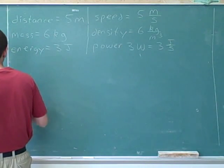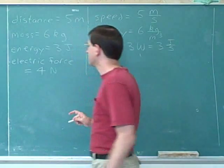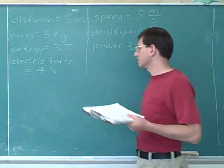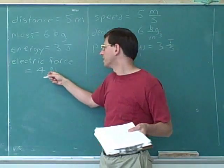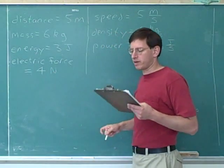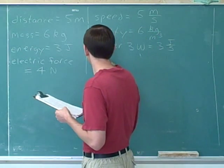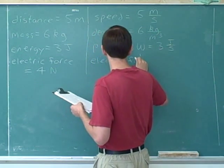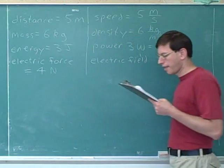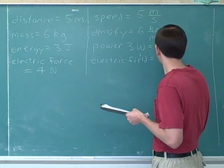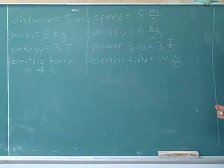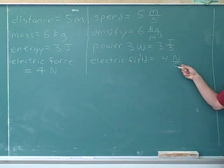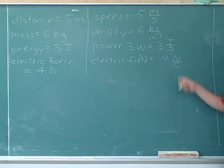Let's say we have an electric force of four newtons. Is this a ratio unit? No, because newtons are not a ratio. But let's say we have an electric field of four newtons per coulomb. Is that a ratio? Yes — newtons per coulomb is a ratio unit, so here's another example of a ratio unit.